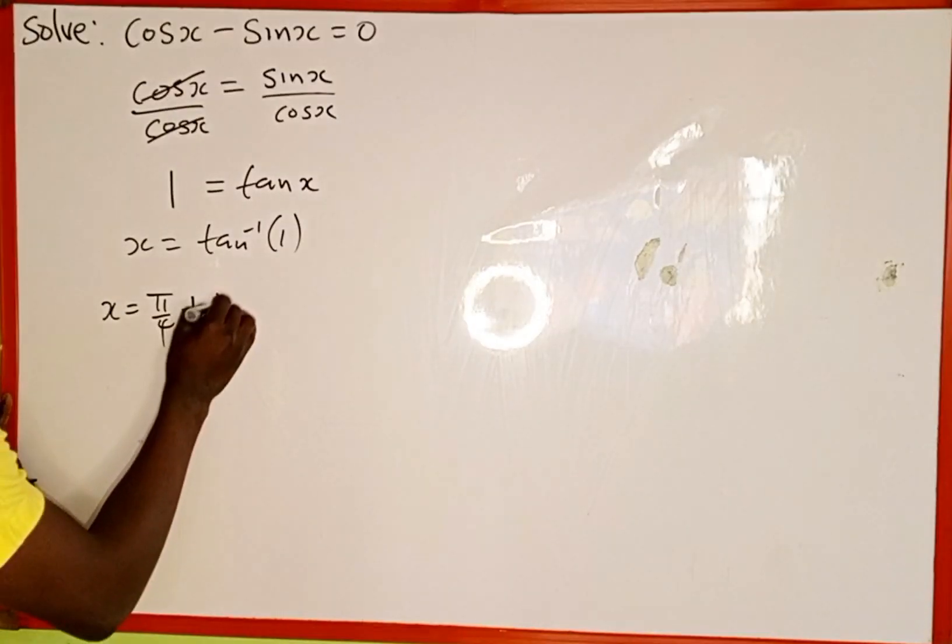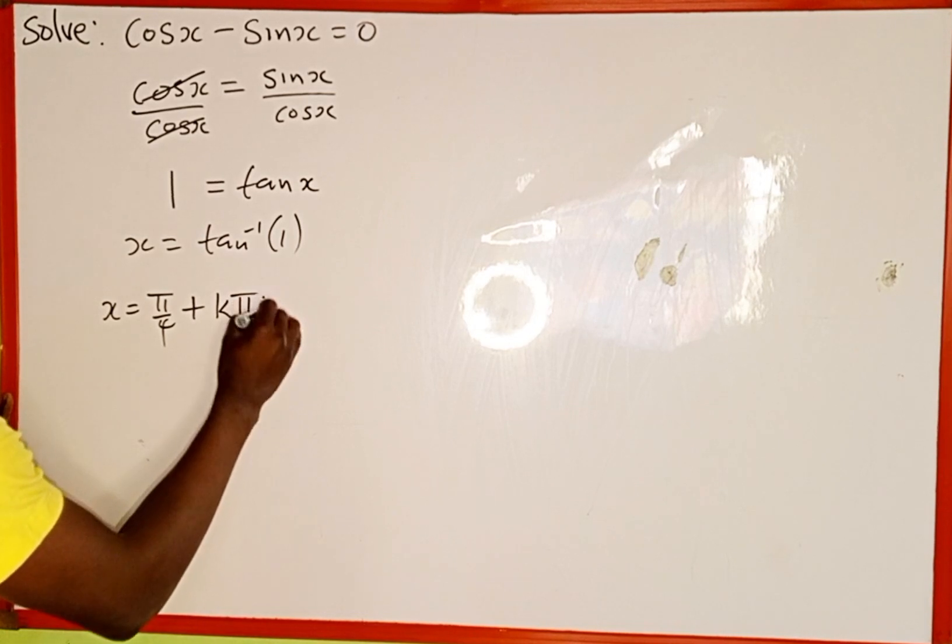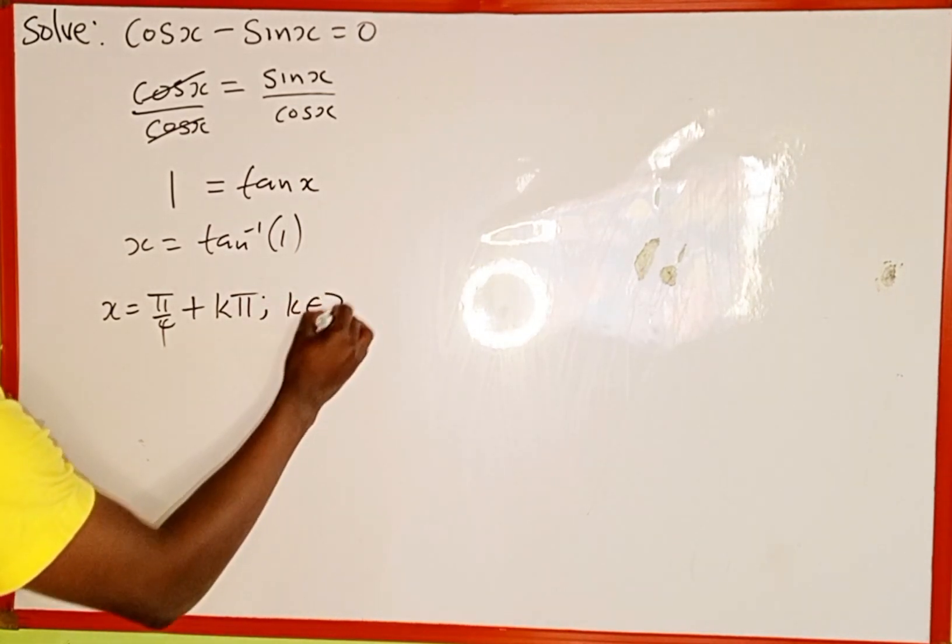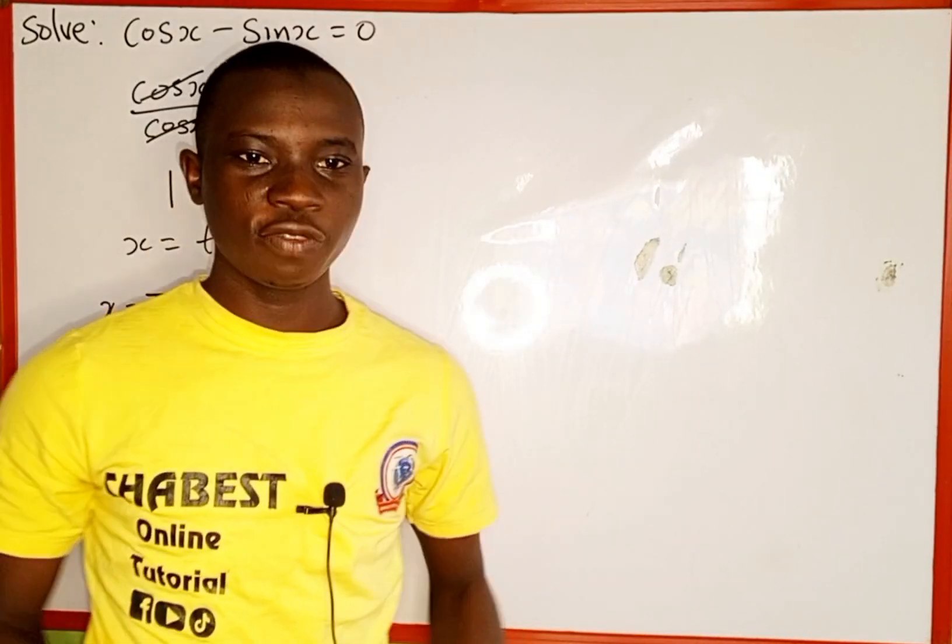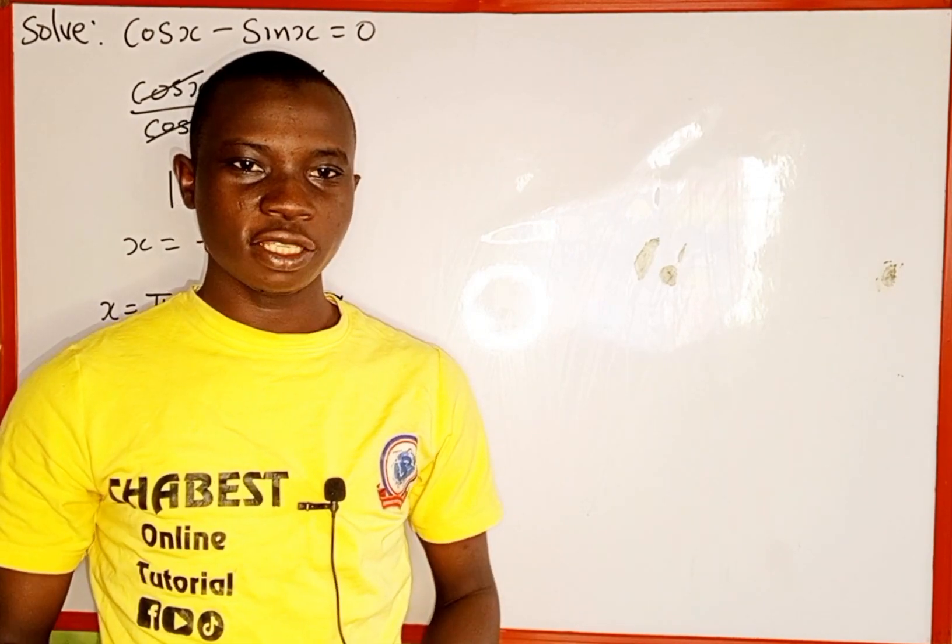We can add constant k pi, where this k here is an element of integers. So this is how to solve for the value of x from the trigonometric equation. Thank you for watching and please follow and subscribe for more videos like this. Thanks.